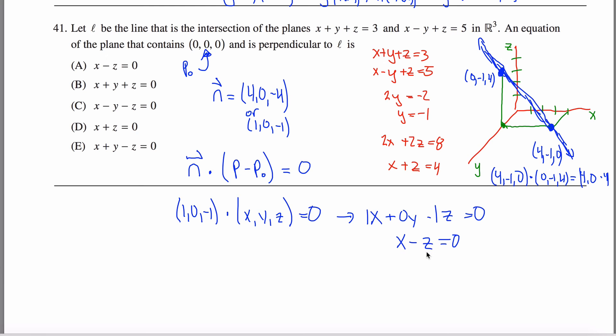This right here will be the equation of the plane that contains this point and is perpendicular to this vector here, which is the same as this vector right here. So my answer, X minus Z equals zero, would be answer A.